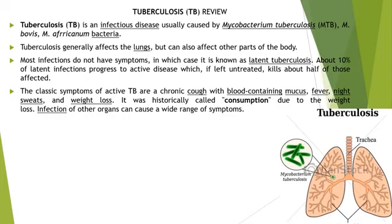The classic symptoms of active TB include chronic cough, which is very persistent. If there is blood, it is called blood-containing mucus. The most common symptoms are chronic cough with blood-containing mucus, fever, night sweats, and weight loss. Tuberculosis was historically called consumption due to the weight loss. Infection of other organs can cause a wide range of symptoms.